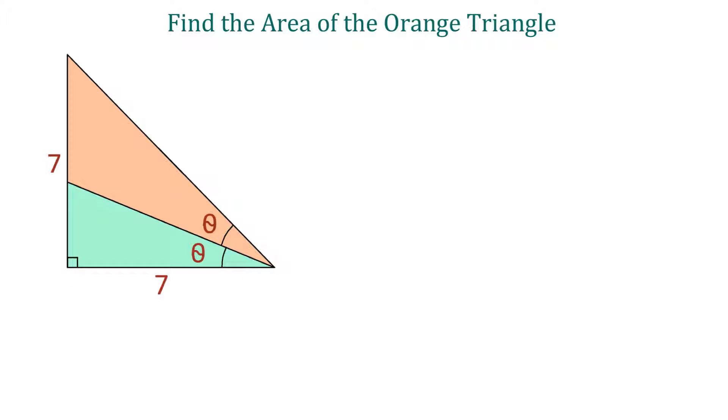This triangle is split into two triangles, one green and one orange, each having an acute angle theta. We need to find the area of the orange triangle.